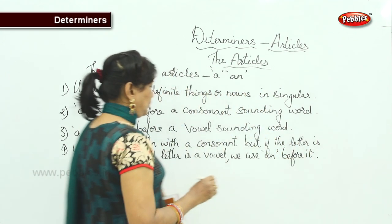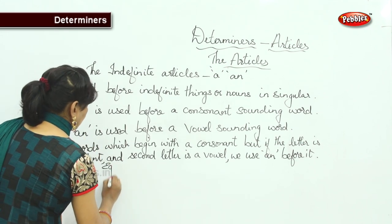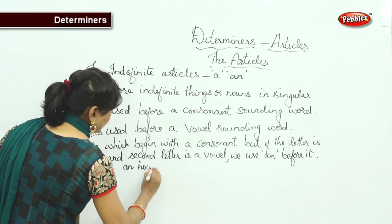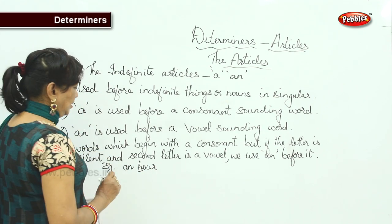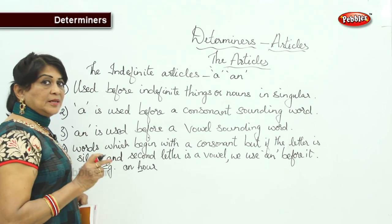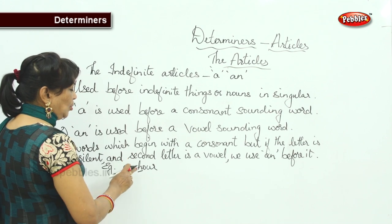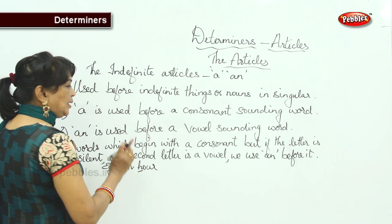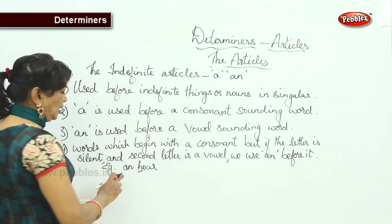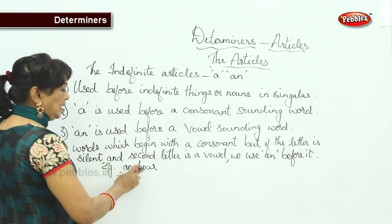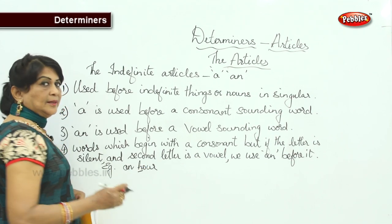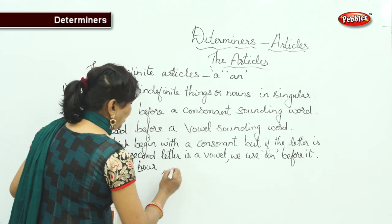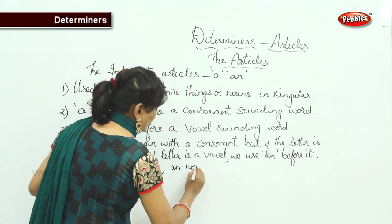If the first letter is silent and the second letter is a vowel, we use 'an' before it. For example: 'an hour' — 'H' is silent, though it is a consonant beginning. The next letter is 'o', a vowel sound, so we use 'an'. Same way: 'an honour', 'an honourable person' — 'He is an honourable man.'